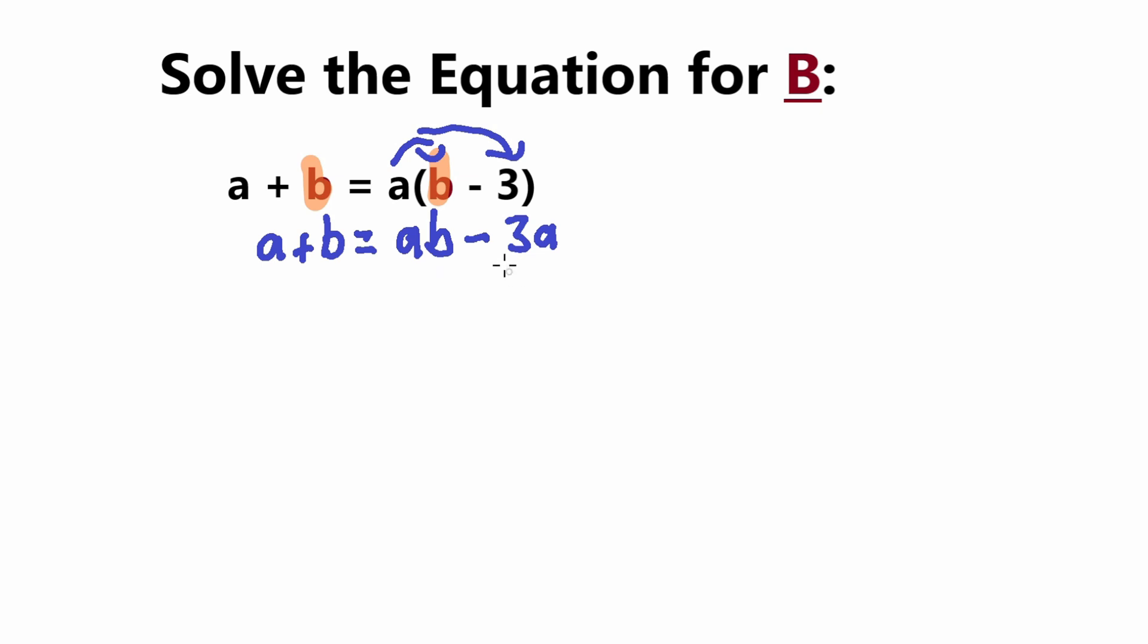And I'm referring to this negative 3a here. So since it's negative 3a, I will add it to the left side. And then I'll have a plus 3a is 4a plus b is equal to now just ab.